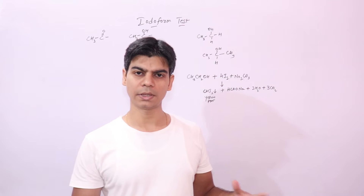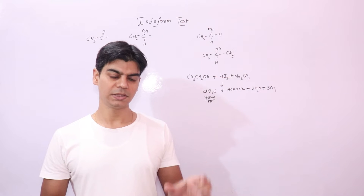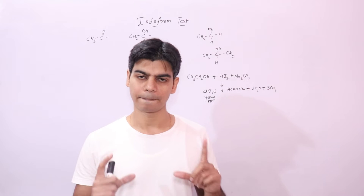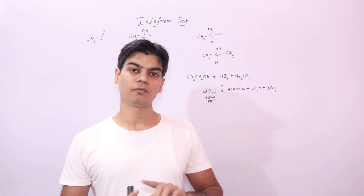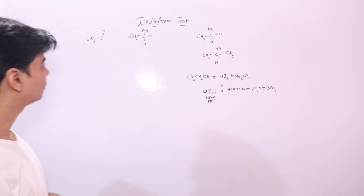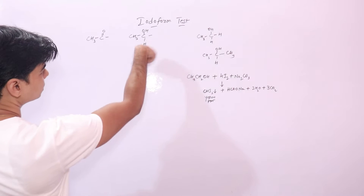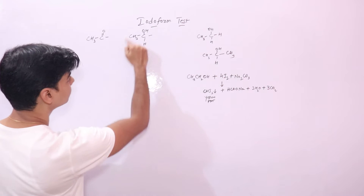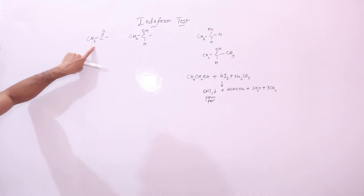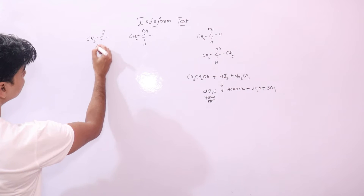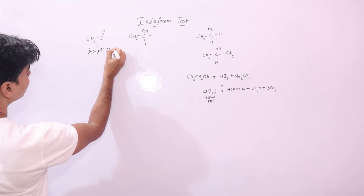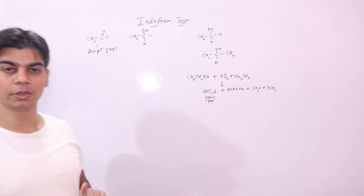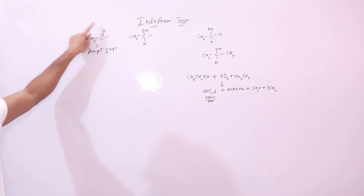Let's see how the acetyl group looks. The acetyl group is CH3CO, where the methyl group is directly attached to the carbonyl carbon. Or compounds that can form this group upon oxidation. Just remember how the acetyl group looks.